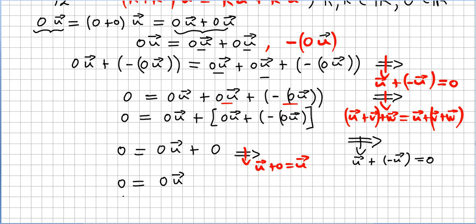So what do we have here? We began with 0u and we have just proved that it is equal to the zero vector 0. And that concludes the proof.